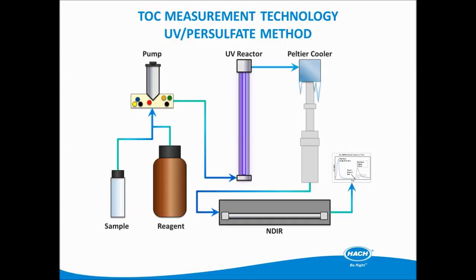Once the UV lamp turns on, the organic carbons are then oxidized. The CO2 gas is then carried through the system with a carrier gas, or CO2-free gas, to the NDIR where the CO2 is measured and results are then reported.